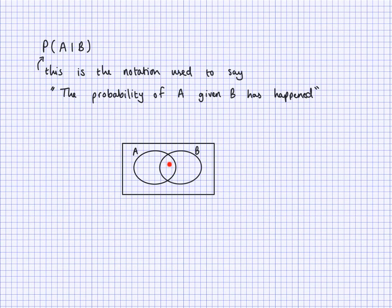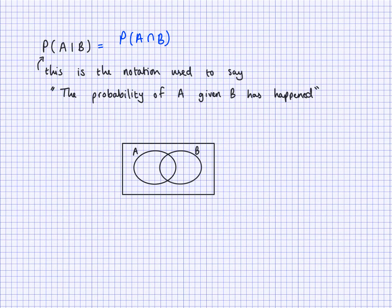We need the intersection at the top of the fraction. So the probability of A given B must be the probability of A and B over the probability of B. This is equal to the probability of A intersection B over probability of B.